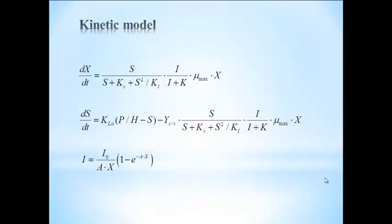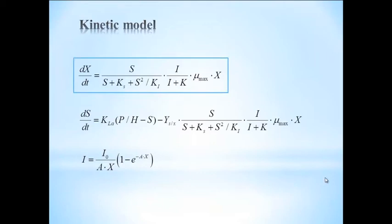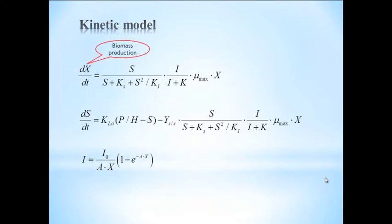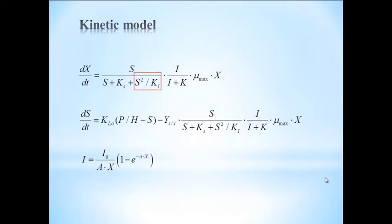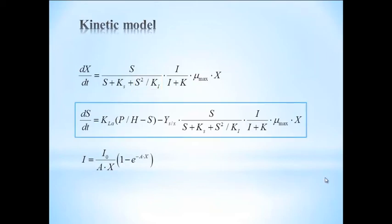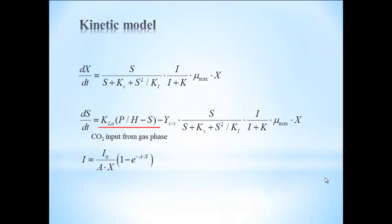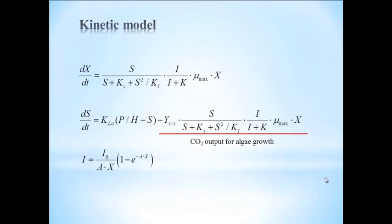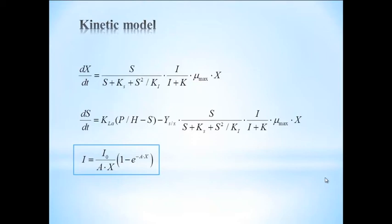We developed a model which describes biomass production, light intensity, and CO2 concentration in the gas and liquid phases. The first equation is the change rate of biomass production, modified from the Monod equation. We assume that the biomass production rate is related to dissolved CO2 and light intensity. We also included the substrate inhibition term since high levels of CO2 will cause growth inhibition. In the second equation, we assume that the change rate of dissolved CO2 depends on CO2 input from the gas phase and CO2 output from algae consumption. The average light intensity in the culture decays as biomass concentration increases because light penetration becomes more difficult when culture density is higher. All parameter values are reported from literature.